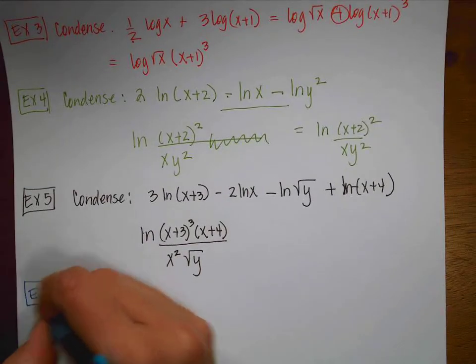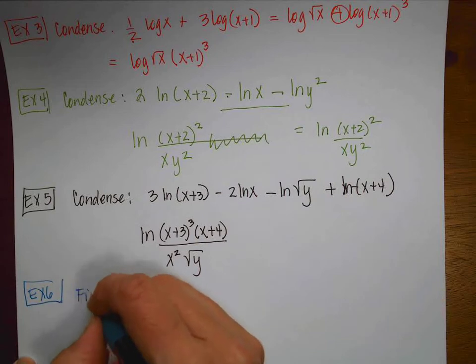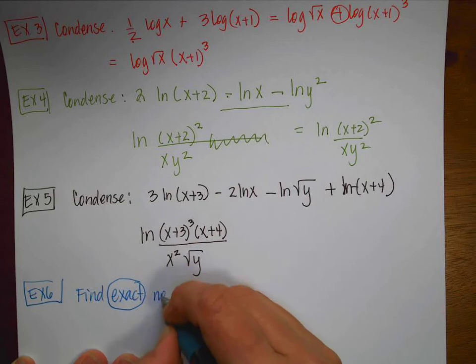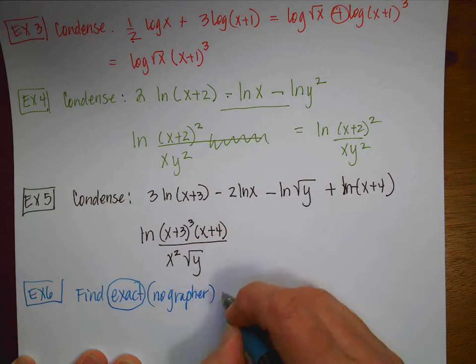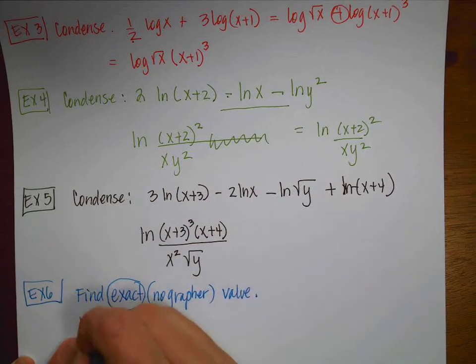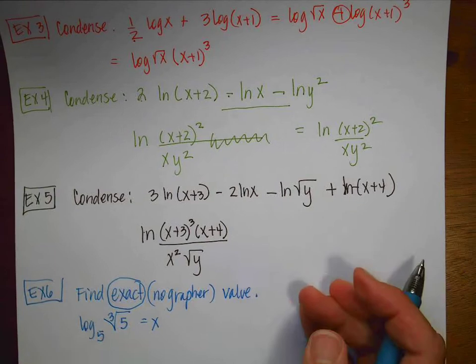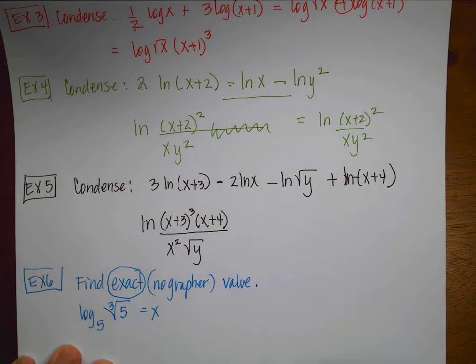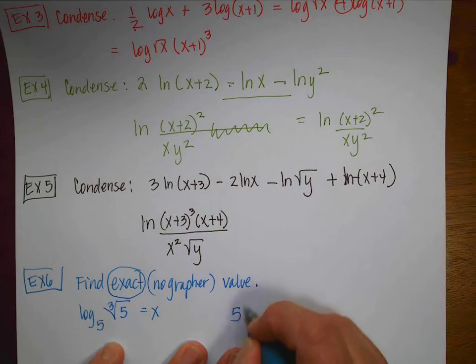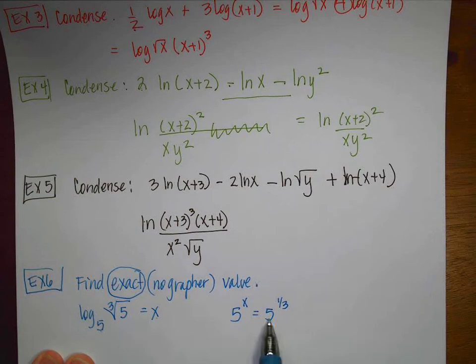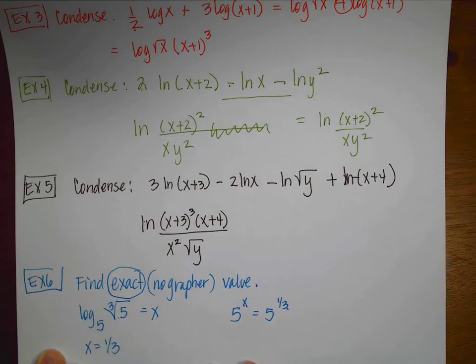Example 6 says find the exact value — remember, exact means no grapher. The function is log base 5 of the cube root of 5 equals x. Because the problem is in log form, convert to exponent form: 5 to the x equals 5 to the one-third. Therefore x equals one-third.